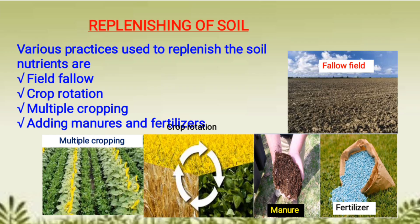Another practice is crop rotation — at one time we can sow a leguminous plant and another time we can sow non-leguminous plants. In this way, the nitrogen content of the soil is balanced.